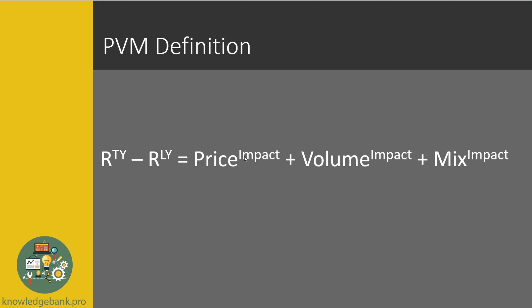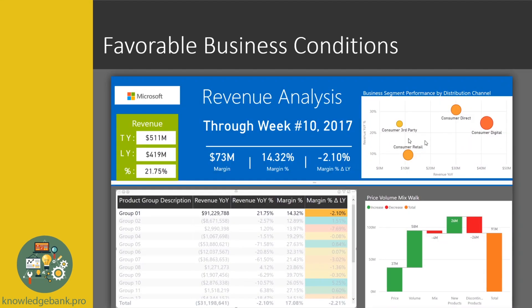Price means: if we didn't change anything other than price, and kept the volume the same as last year, what would the contribution of price be? Volume means: if we kept the price constant to last year and only the volume changed, what would the contribution of that bucket be? And then here is the contribution of the type of product we're selling — high-value, high-priced products versus low-priced products. Now let's take a look at a couple of examples so that it makes a little bit more sense.